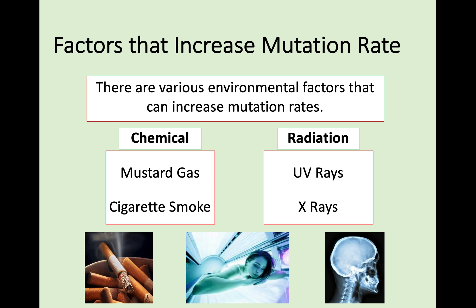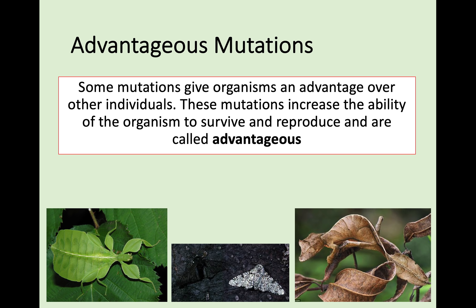Now we know things that can increase mutation rates, we want to look at the three different types of mutation. The first one is advantageous mutations. As the name suggests, some mutations give organisms an advantage over other individuals. These mutations, entirely by chance, increase the ability of an organism or species to survive and reproduce. In these pictures, you've got animals that have had mutations giving them an advantage, usually in the form of camouflage.